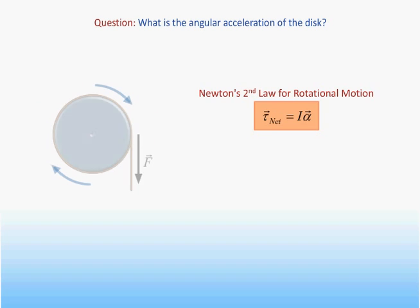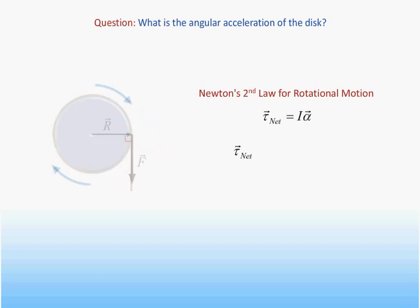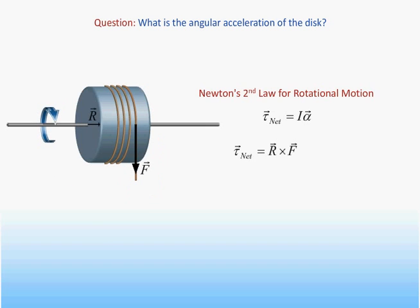We will start by defining the system to be the disk and calculating the torque exerted on the system about the rotation axis. The torque is produced by the applied force F, which always acts at a distance R from the axis. Furthermore, the direction of the force is always perpendicular to R, the vector from the axis to the point of application of the force. Therefore, the torque vector R cross F has magnitude equal to R times F and, using the right-hand rule, points to the right.